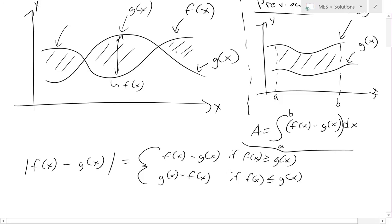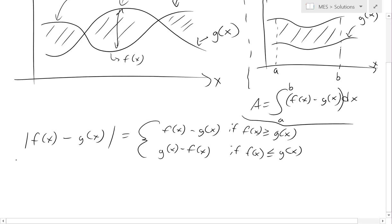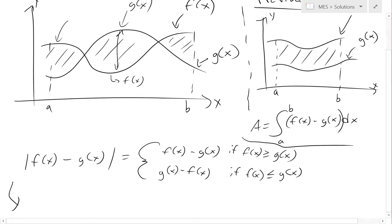So, then we would basically split this up into three regions right here. This would be g of x minus f of x for positive value right there. So, if you had from a all the way to b, now the area of this, and this applies to this case as well,